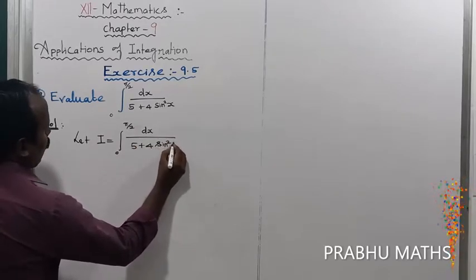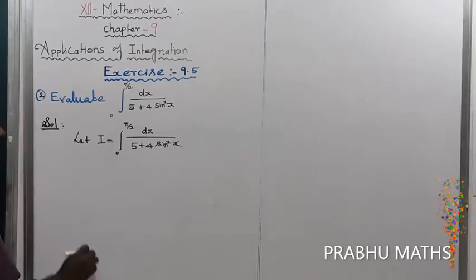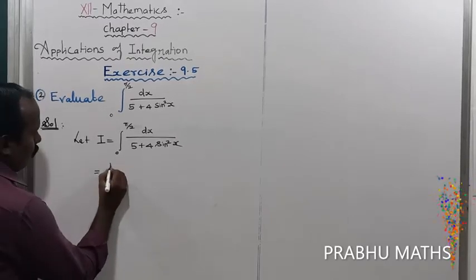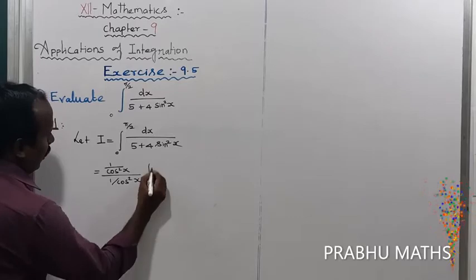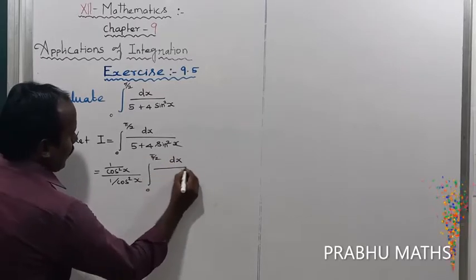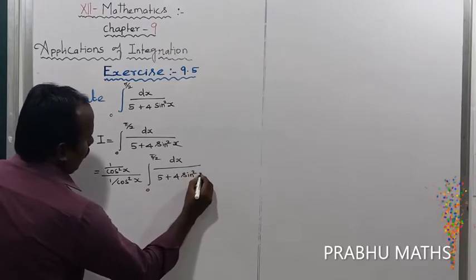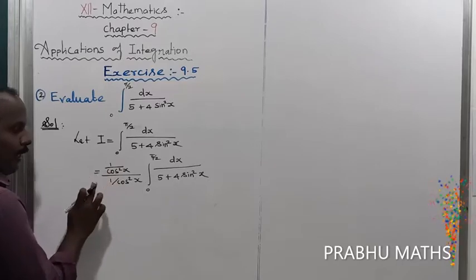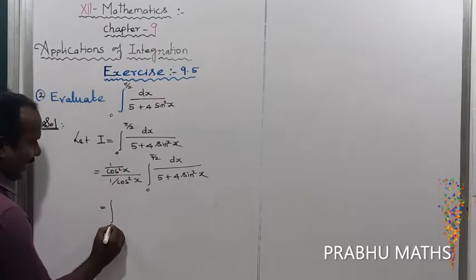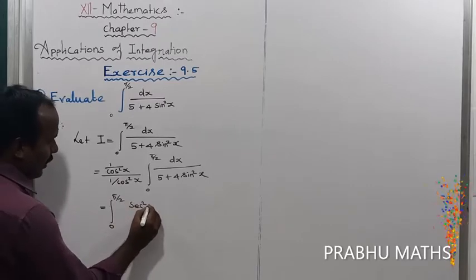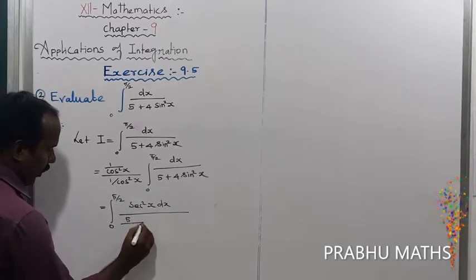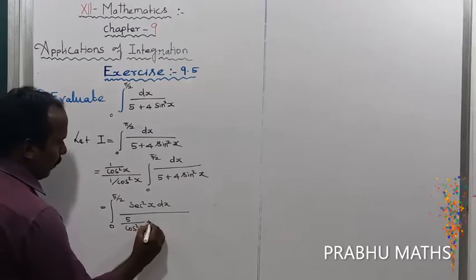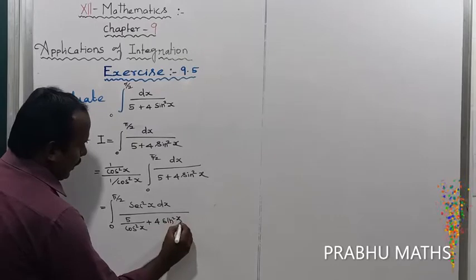First, multiply the numerator and denominator by 1/cos²x. So the integral becomes 0 to pi/2 of (1/cos²x) divided by (1/cos²x), and expanding: the numerator 1/cos²x becomes sec²x. The denominator gives 5/cos²x plus 4 sin²x/cos²x.